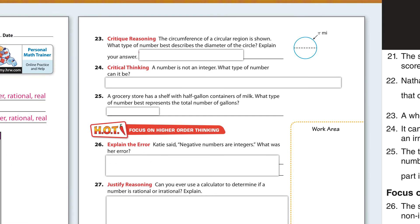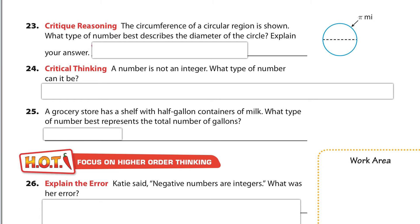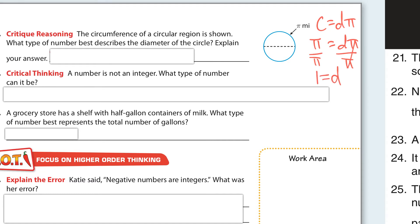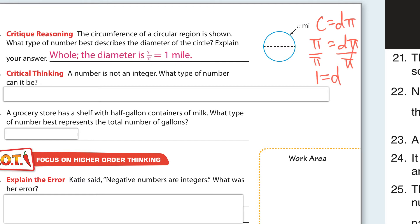Now on the second page: the circumference of a circular region is shown — what type of number best describes the diameter? The circumference equals diameter times pi, and they're telling us the circumference is pi. So pi equals diameter times pi. Dividing both sides by pi — anything divided by itself is 1 — so the diameter is 1. And 1 is a whole number, so it'll be a whole number, since pi divided by pi is 1.